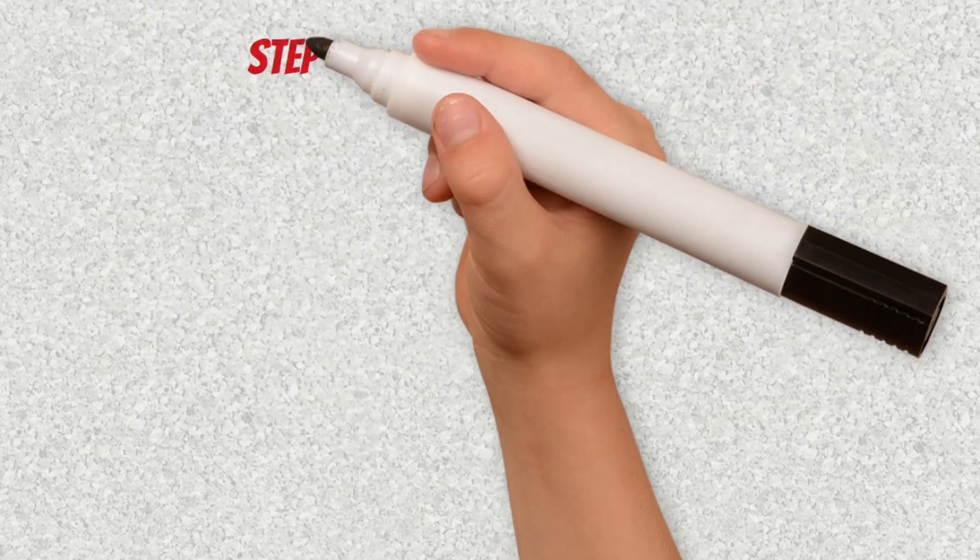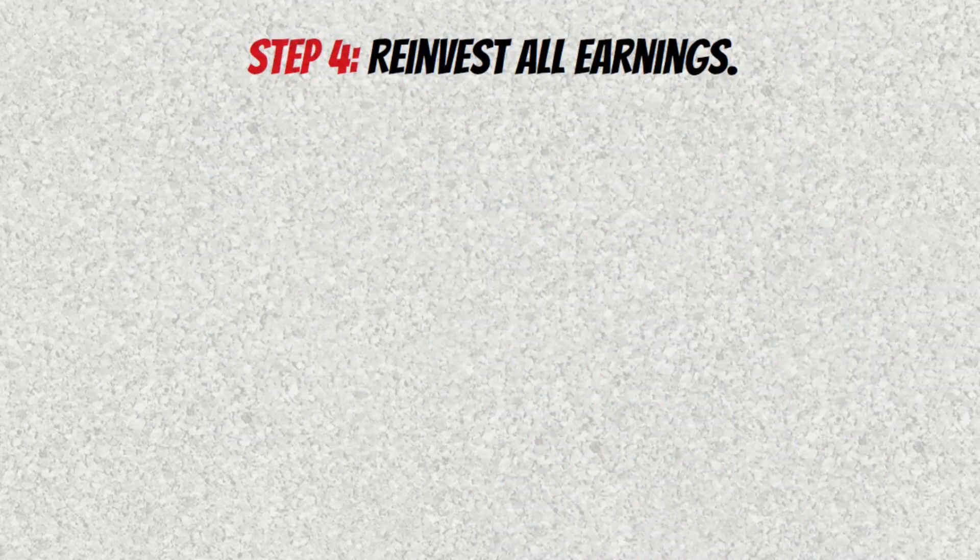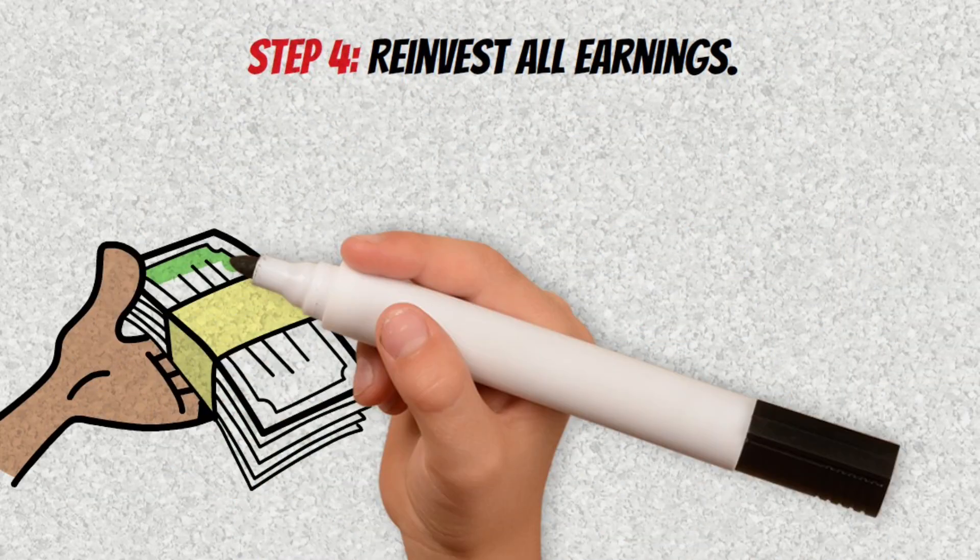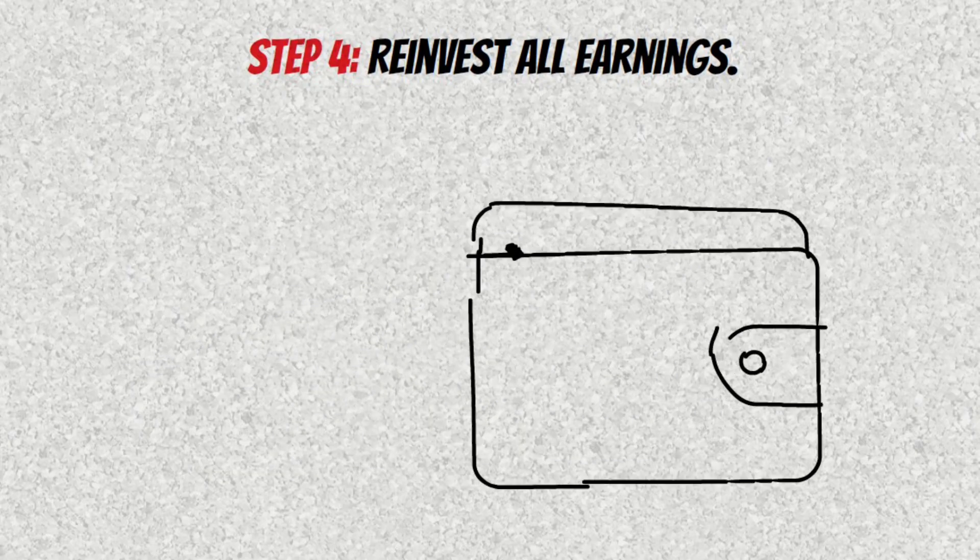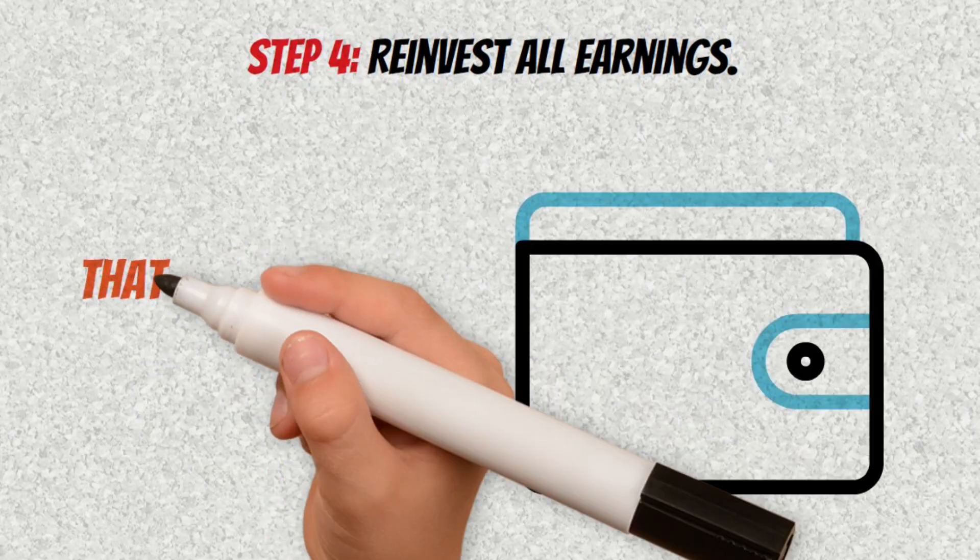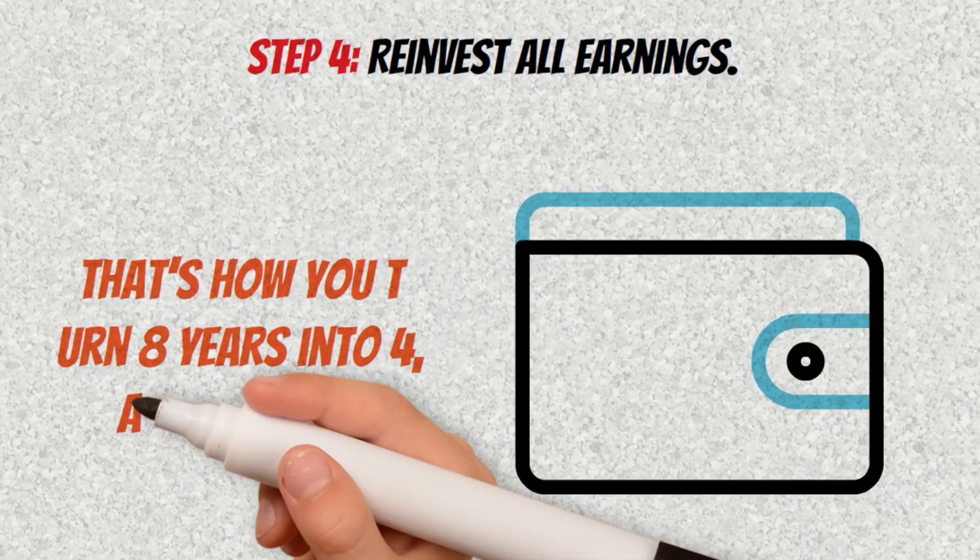Step 4: Reinvest all earnings. No matter how small the profits are at first, every cent reinvested shortens the cycle. That's how you turn 8 years into 4 and 4 into 3.